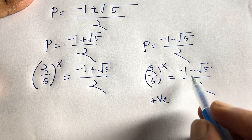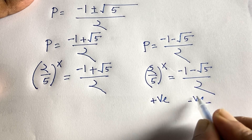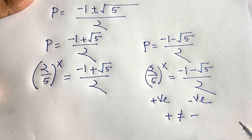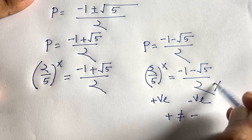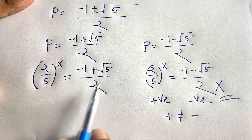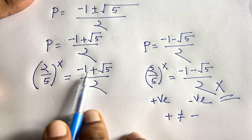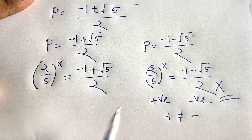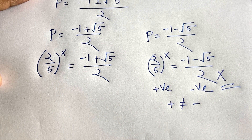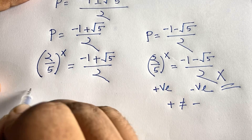Now, (2/5)^x is always positive. But (-1 - √5)/2 is always negative since √5 ≈ 2.2. A positive value cannot equal a negative value, so we reject that solution. We keep only p = (-1 + √5)/2, which is positive, so both sides match.